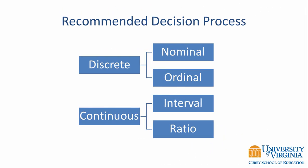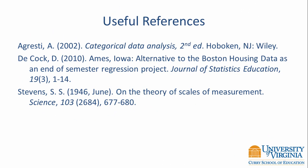Correctly identifying the type of data is an important first step in data analysis. I recommend that you first determine whether the data are discrete or continuous, and then determine whether the data are nominal, ordinal, interval, or ratio. Once you know the type of data, you can choose the correct method of analysis.